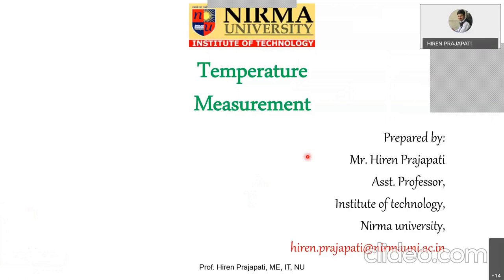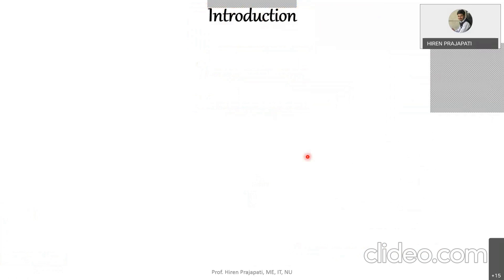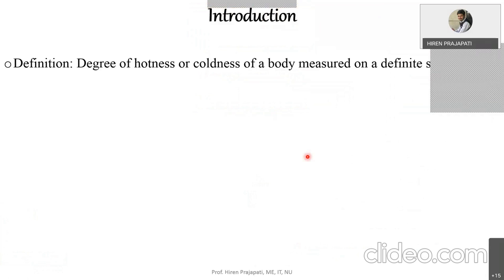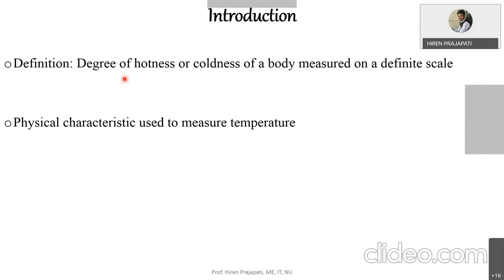Today we'll be discussing some instruments used for temperature measurement. Temperature tells us about the degree of hotness and coldness. Since temperature is not a direct quantity, it needs to be represented on a linear scale. To indicate it, we use different physical characteristics to measure temperature.